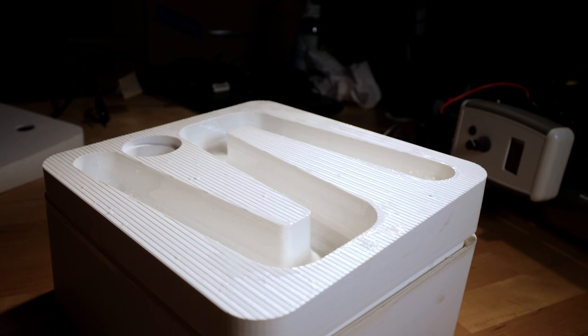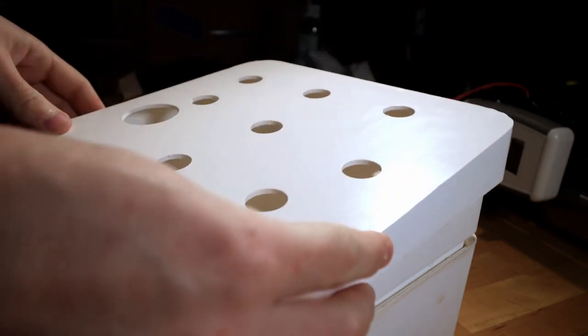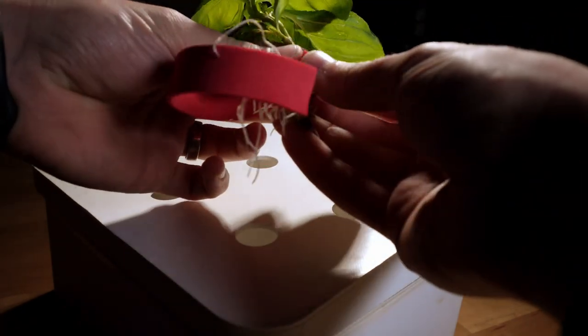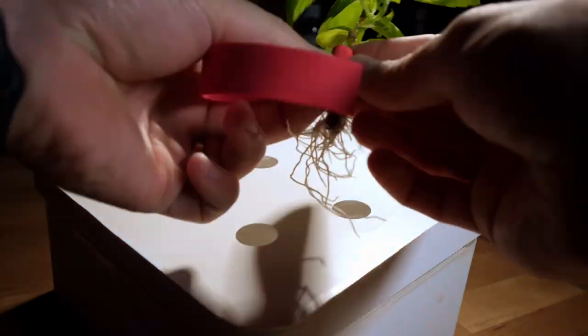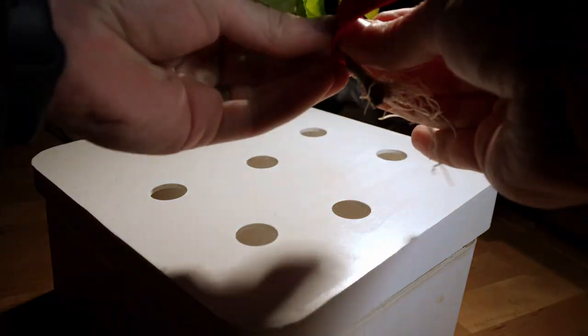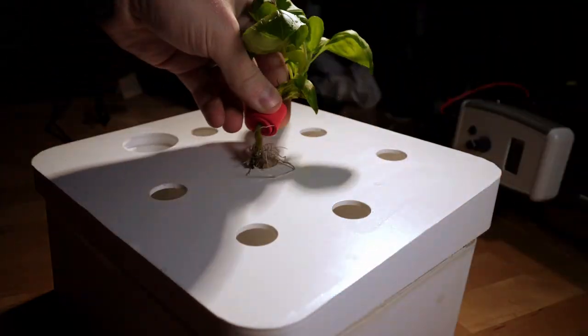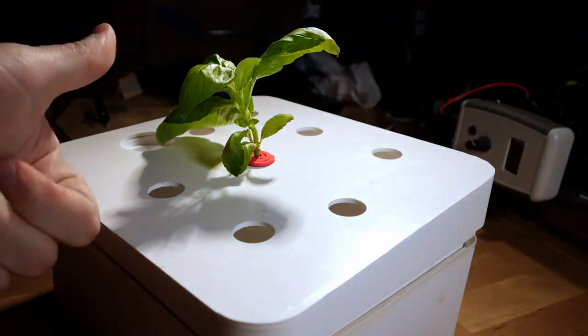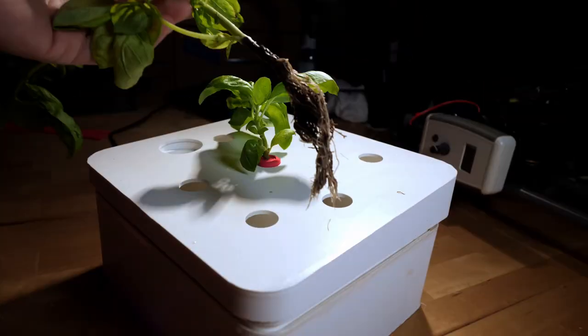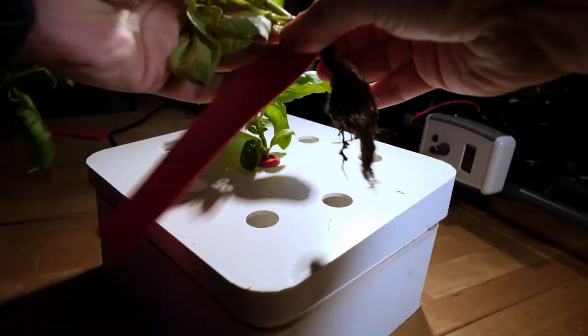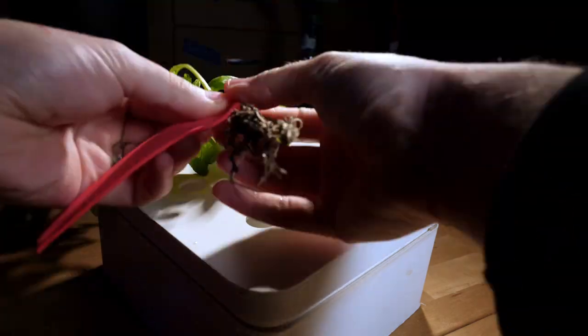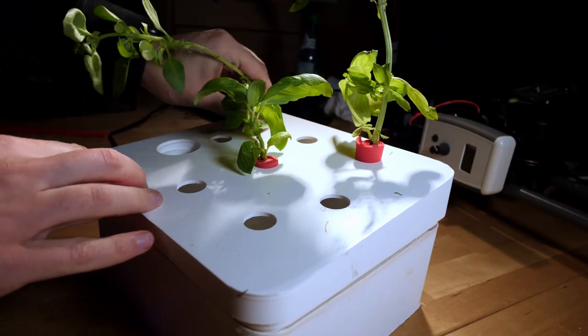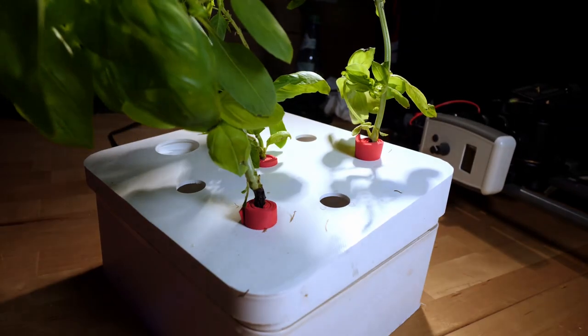The stem of each plant gets wrapped in foam rubber. To get them to stay in place, we add a cover.